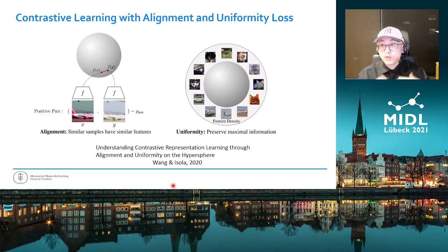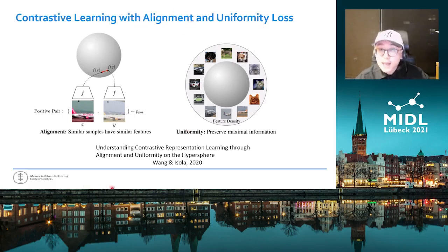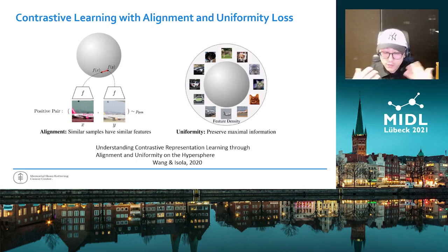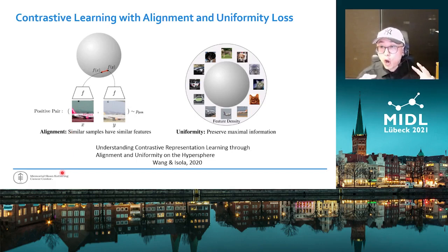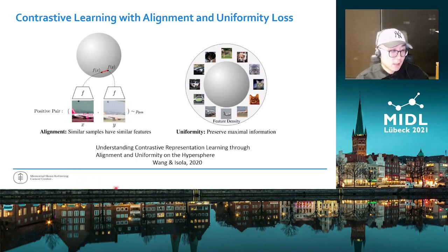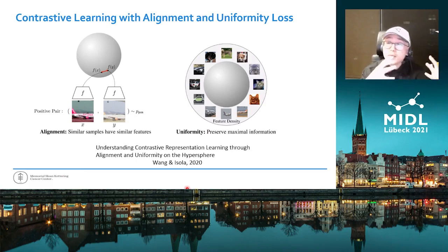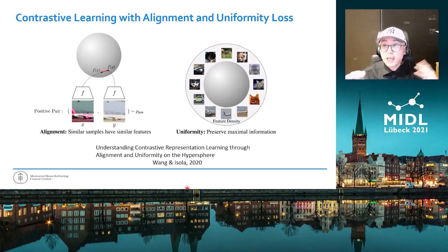Our representation learning method is mostly adapted from a contrastive representation learning framework where the contrastive loss is formulated as a combination of the so-called alignment loss and uniformity loss. The basic idea of contrastive learning is that certain image transformations, such as randomly rescaling or color jittering, should not change the identity of the object we're interested in. So the alignment loss encourages representation vectors of image transformations from the same image to be close to each other in the embedding space, while the uniformity loss encourages representation vectors of random images to be distributed approximately uniformly on a high-dimensional sphere.